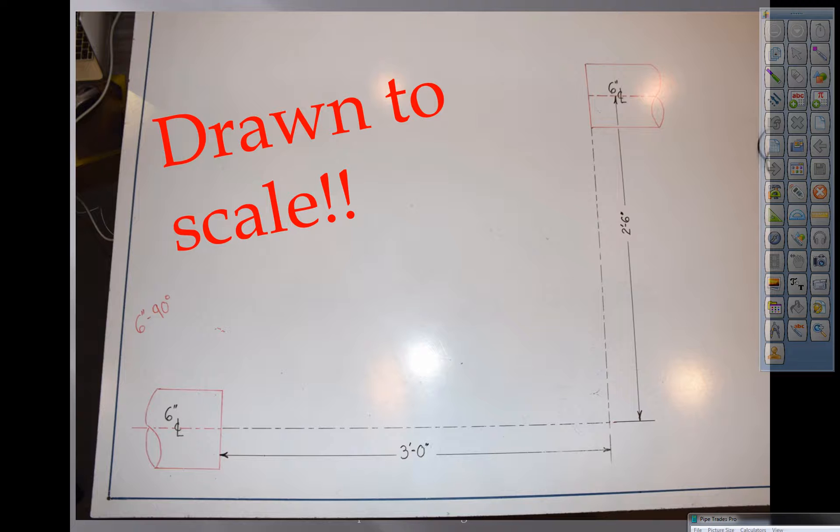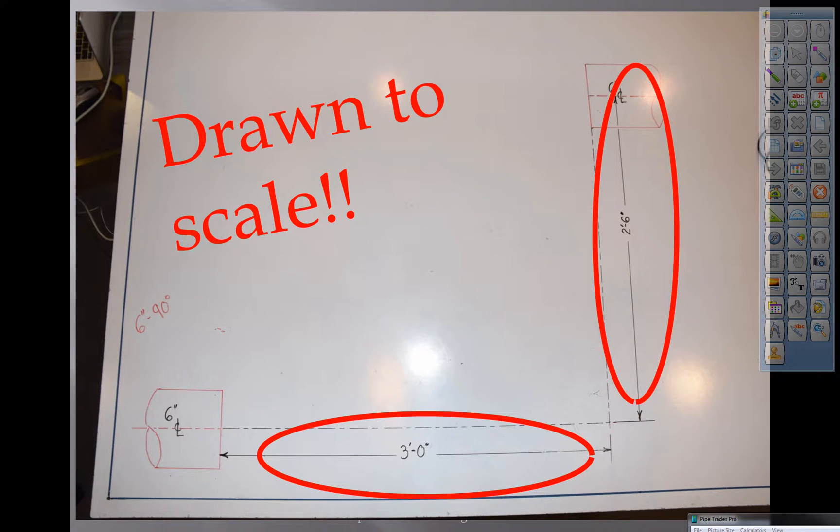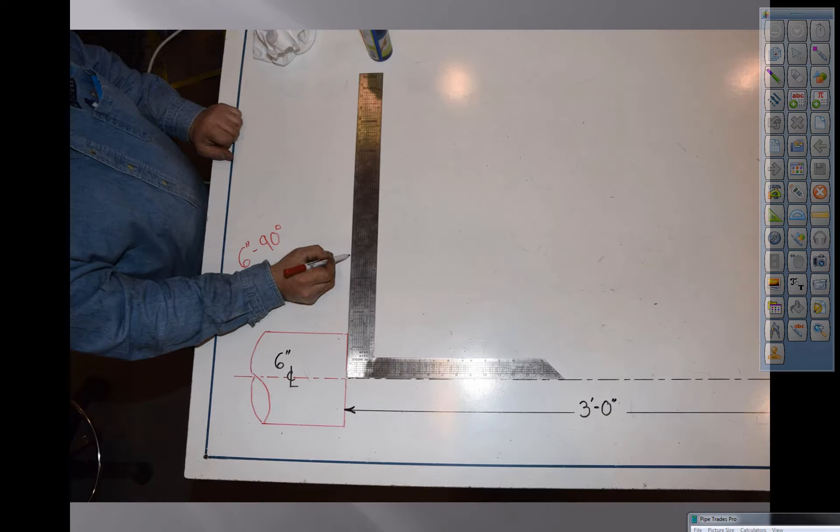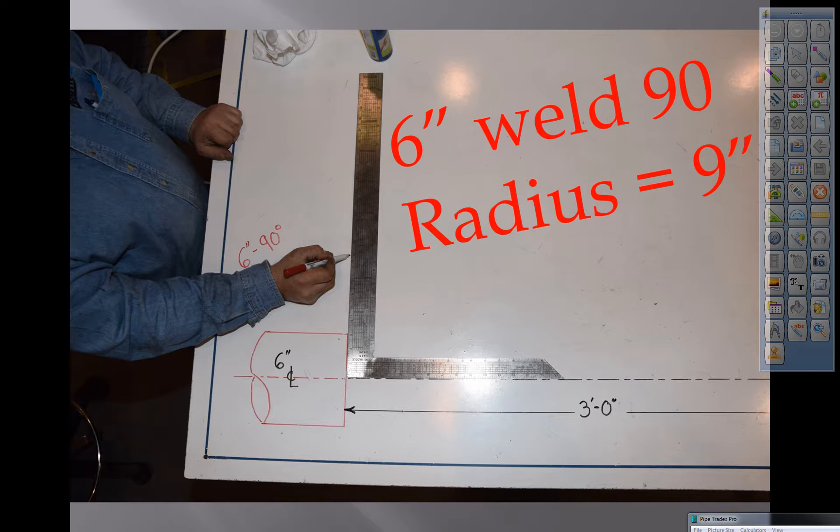So we're dealing with six inch pipe. We have two foot six up and down, elevation change, and we have three foot in a left to right fashion. Now we're dealing with six inch weld fittings. We're dealing with long radius 90s. A six inch long radius 90 equals nine inches, and that's a given.